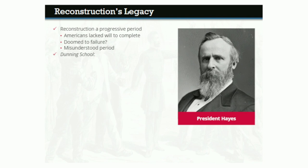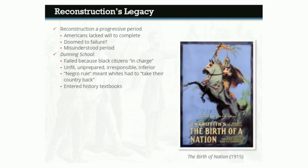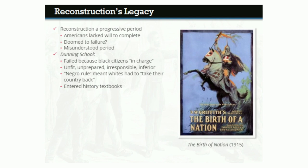For William Dunning and his fellow historians, Reconstruction failed because black citizens had been in charge of it. They were supposedly unfit for the responsibility — unprepared to vote, hold office, or exercise civil rights because they were racially inferior. In this view, Negro rule was so corrupt and chaotic that Southern whites were basically forced to take their country back, redeeming the South and returning blacks to their proper place. The Dunning School version of Reconstruction justified Jim Crow and white supremacy, and it became widely accepted after entering history textbooks of the early 20th century. It was further reinforced by the wildly popular 1915 film The Birth of a Nation, which packaged these lies as entertainment for mass audiences.